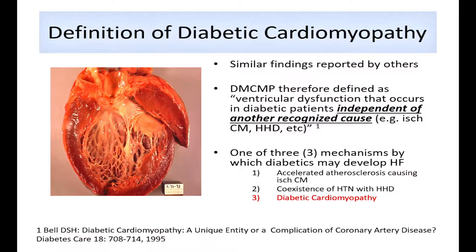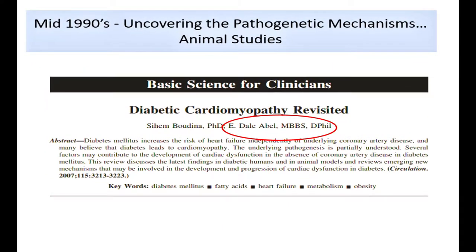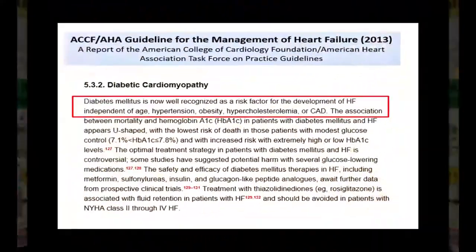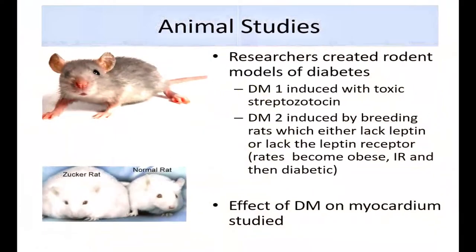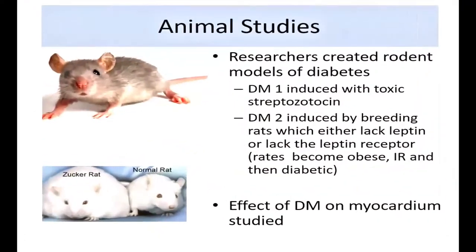Diabetic cardiomyopathy is felt to be one of three mechanisms by which diabetic patients develop heart failure. The pathophysiology is complex. One of our very own, Professor Dale Abel — a graduate of the University of the West Indies, Rhodes Scholar to Oxford, and currently professor at the University of Salt Lake City — has been instrumental in elucidating these mechanisms. He created rodent models of diabetes: Type 1 by injecting streptozotocin, which is toxic to beta cells causing insulinopenia; Type 2 by breeding rats lacking the leptin receptor, making them morbidly obese, insulin resistant, and then diabetic.